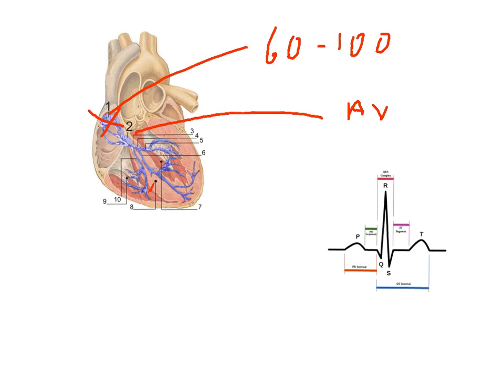But its set rate or its intrinsic rate is slower than the ventricle and its set rate is about 40 to 60 times a minute. And if the AV node were to fail, the ventricles themselves, cells in the ventricles can actually take over as a pacemaker.